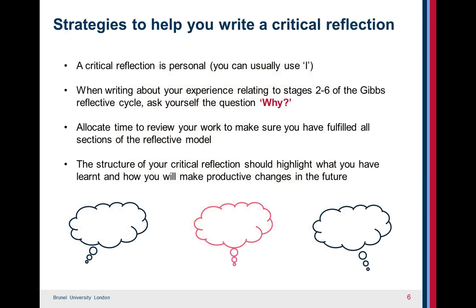Here are some strategies to help you to write a critical reflection. Because it's personal, you can usually use 'I'. When writing about your experience relating to stages two to six of the Gibbs reflective cycle, ask yourself the question: why? This will help you to move away from description and into the realm of analysis. Allocate time to review your work to make sure you have fulfilled all sections of the reflective model. Remember that the structure of your critical reflection should highlight what you have learnt and how you will make productive changes in the future.